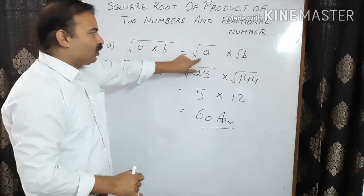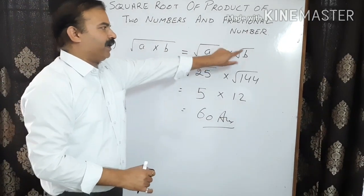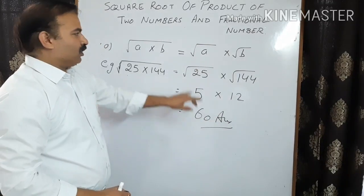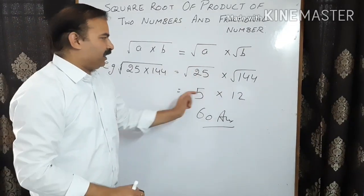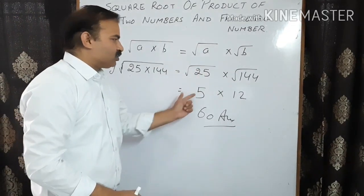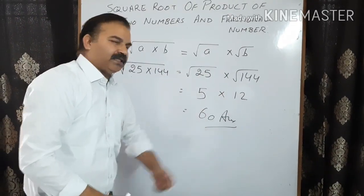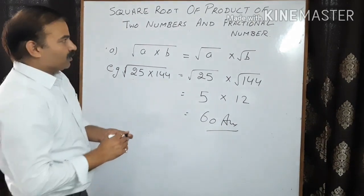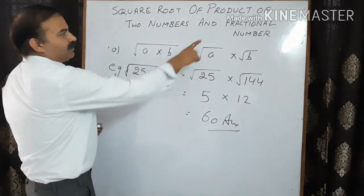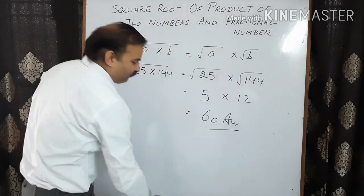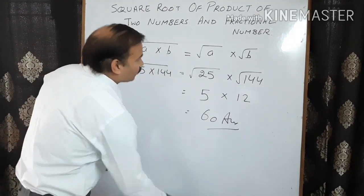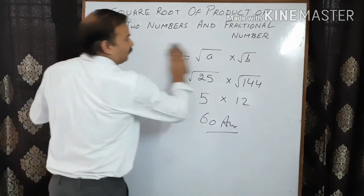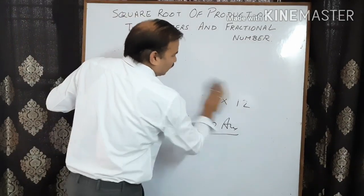So the formula is: square root of a multiplied by b is equal to square root of a multiplied by square root of b. Write them separately, find the square root of each, and that is the answer. Now the second topic is the fractional number, where the numbers are in the form of a fraction — numerator upon denominator.